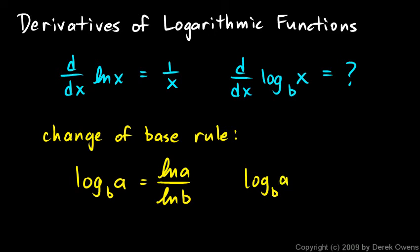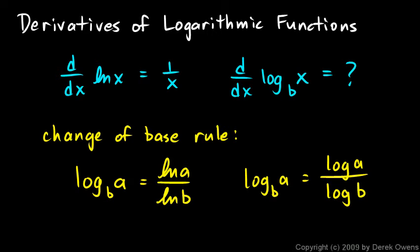Or you could say log base b of a equals the base-10 log of a over the base-10 log of b. This allows us to compute logs of any base on a calculator. Our calculator will do natural log and base-10 log, but not other bases like base 3 or base 5.2. Using this change of base rule, we can always express any logarithm in terms of a natural log or a common log.